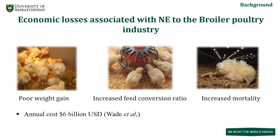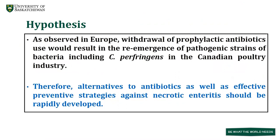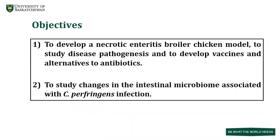Canadian chicken farmers have voluntarily withdrawn the use of category one and category two antibiotics already in 2018, and are planning to withdraw category three antibiotics in the near future. Therefore, there is an imminent need to find alternative preventive strategies. We hypothesize that, as observed in Europe, withdrawal of prophylactic antibiotics would result in re-emergence of pathogenic strains including C. perfringens in the Canadian poultry industry. Our objectives are to develop a necrotic enteritis disease model and to study the intestinal microbiome associated with C. perfringens infection.